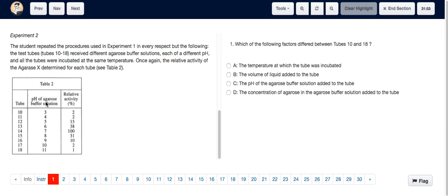We can see that the pH of the agarose buffer solution is different. Tube 10 has a pH of agarose buffer solution 3, and tube 18 has a pH 11. So the answer is going to be C.